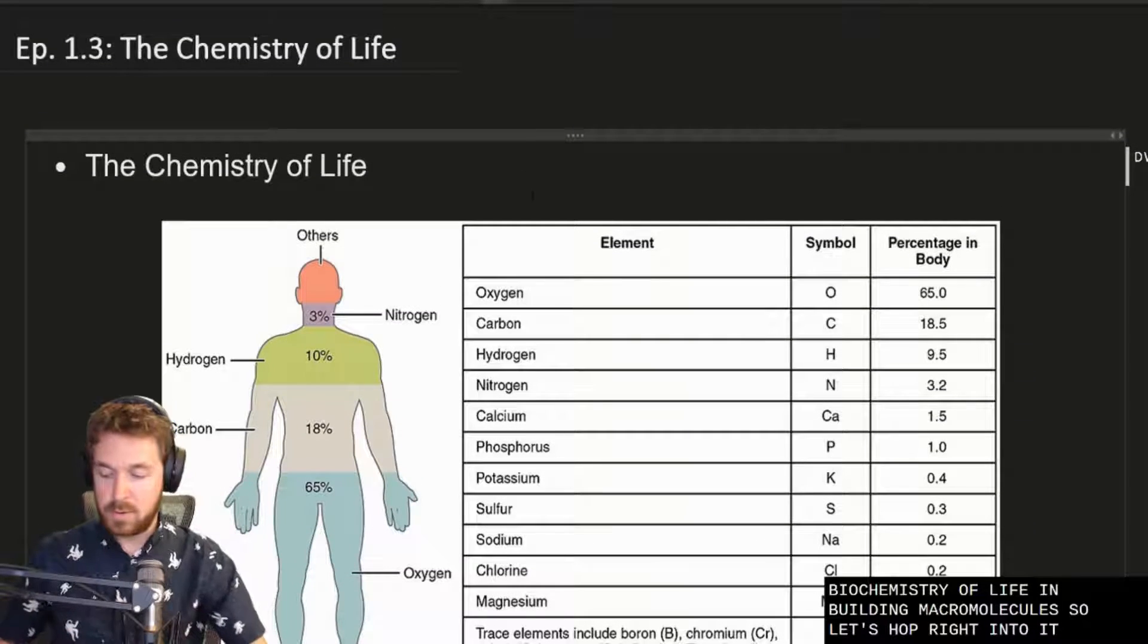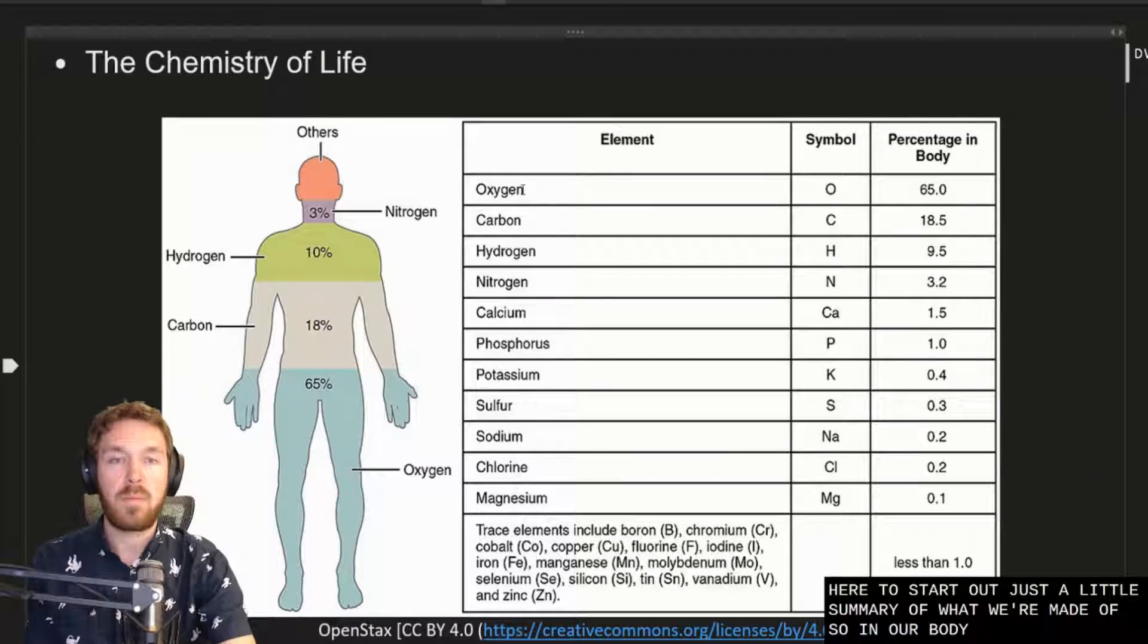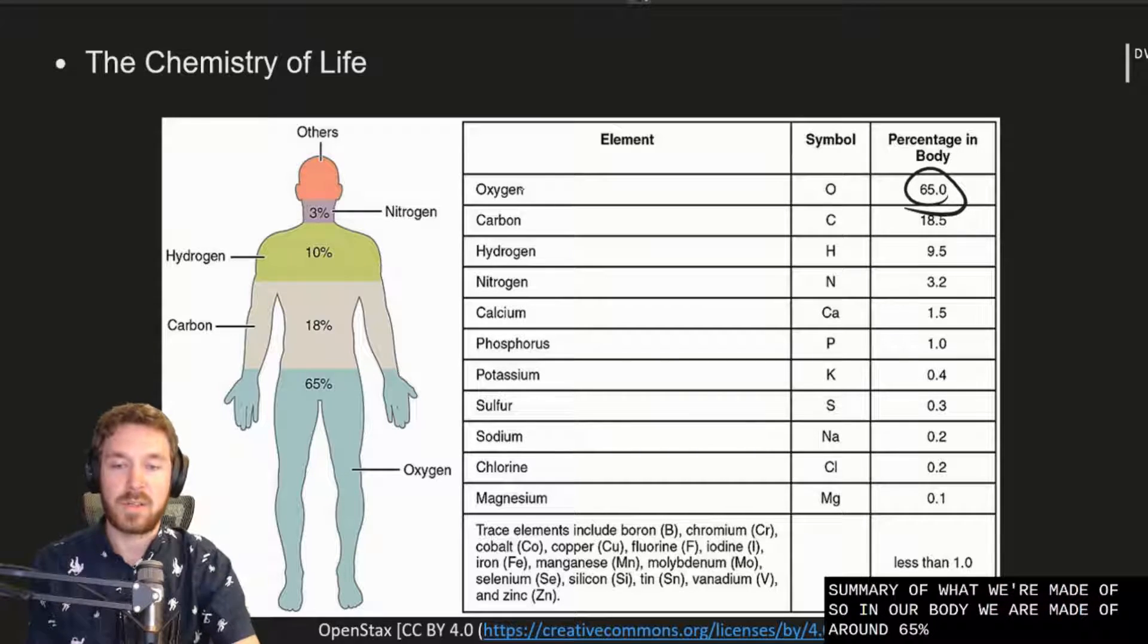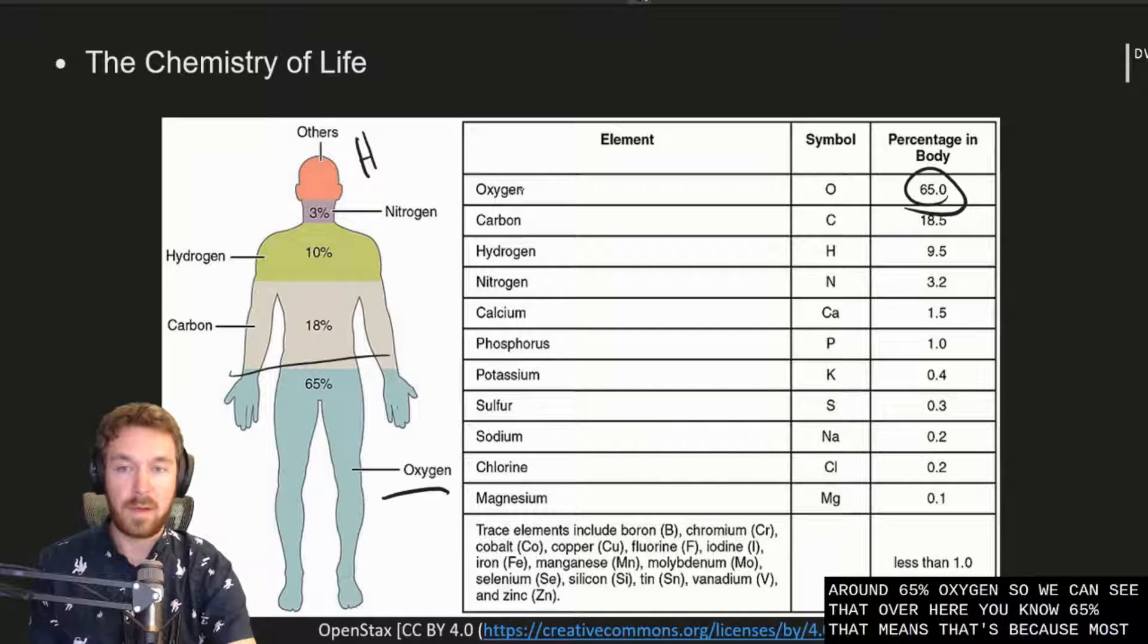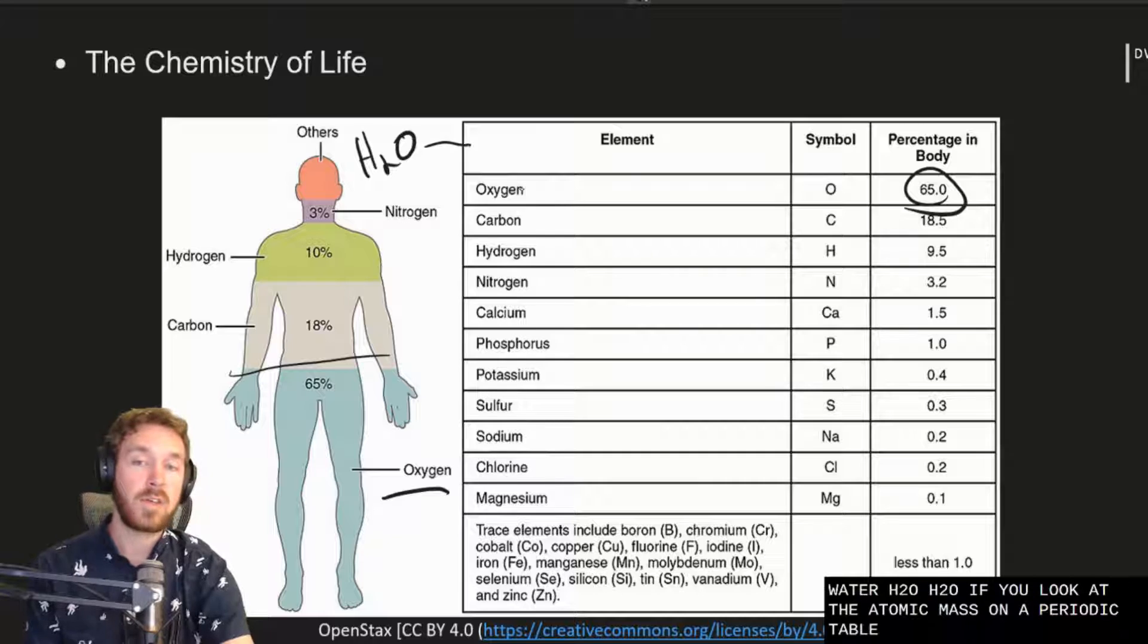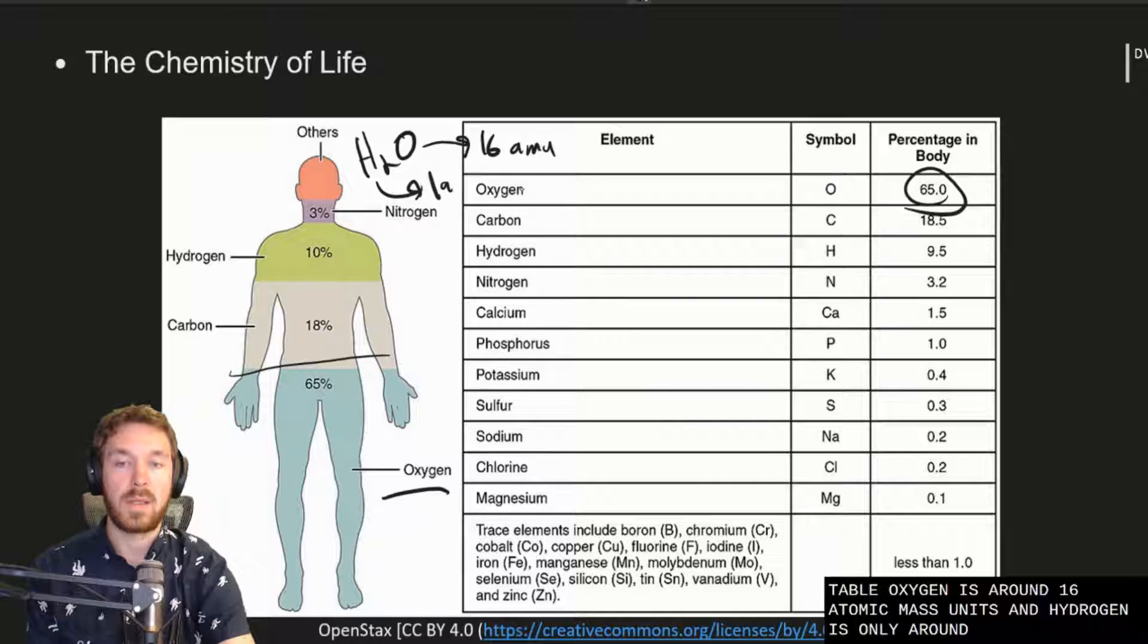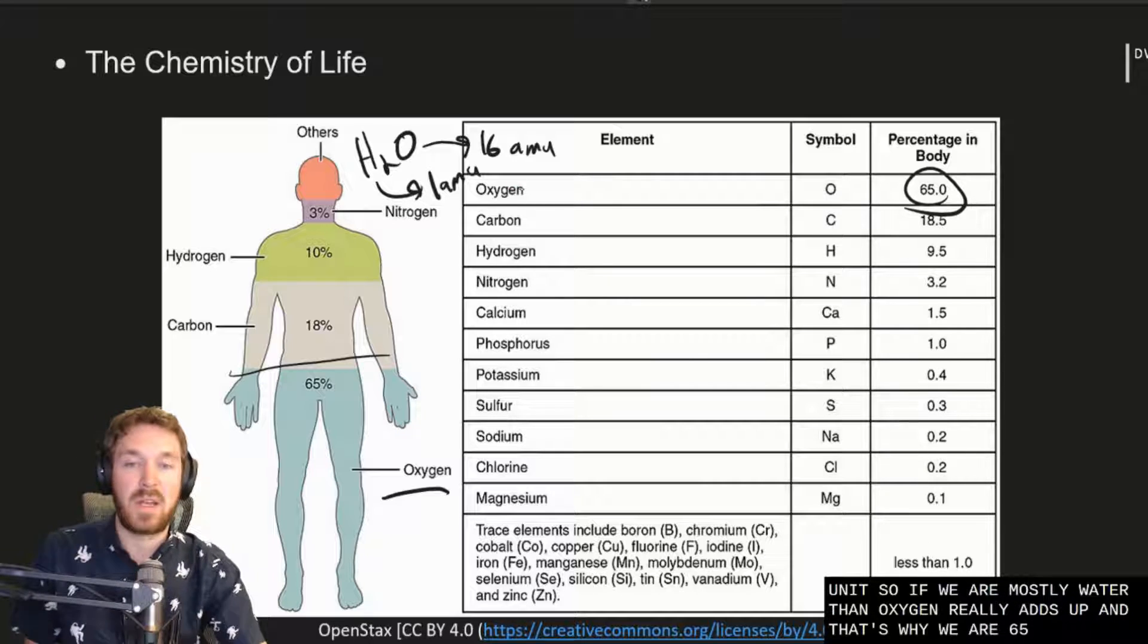So right here to start out just a little summary of what we're made of. So in our body we are made of around 65% oxygen. So we can see that over here you know around 65%. That means that's because most of us well most of our body is water H2O. H2O if you look at the atomic mass on a periodic table oxygen is around 16 atomic mass units and hydrogen is only around one atomic mass unit. So if we are mostly water that oxygen really adds up and that's why we are 65% oxygen.